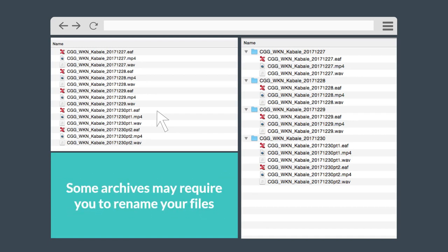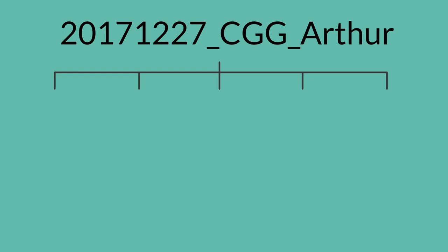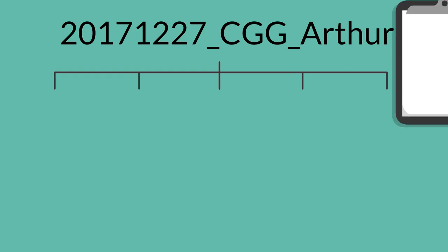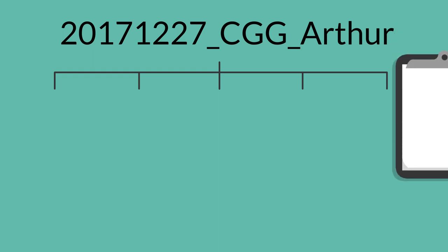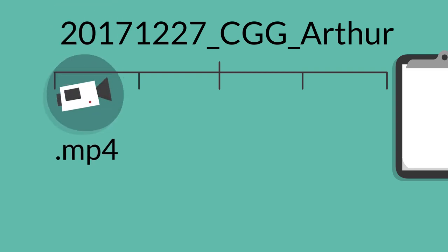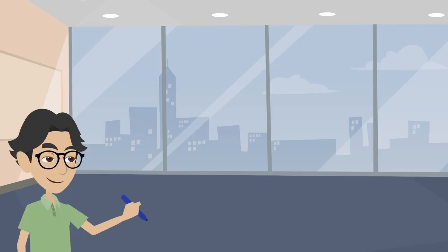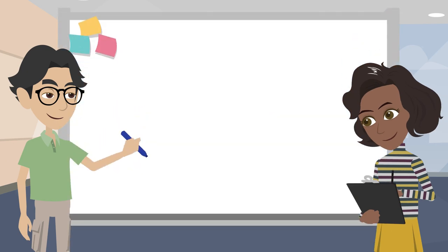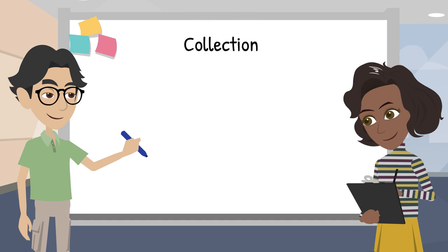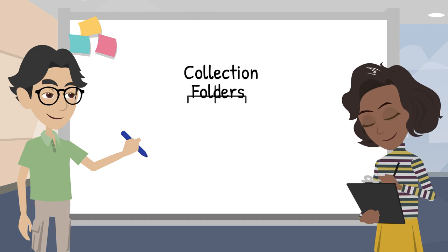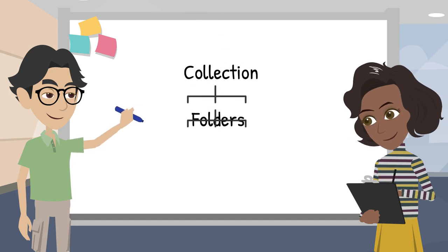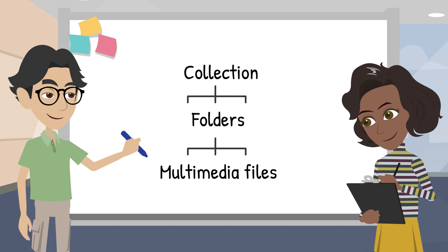Some archives may require you to rename your files. However you organize your data, it's essential that you keep track of how all the materials go together, such as video files, audio files, and their transcriptions. If you have a project that you know will be going into a specific archive, determine early on how they would like those materials organized for deposit, so you can map out that organizational structure before you start collecting your data. This will lessen the work in the long run.